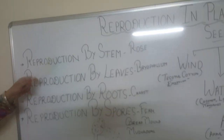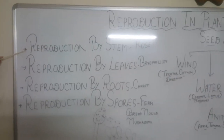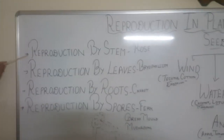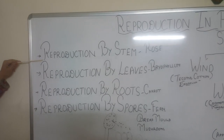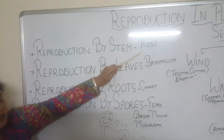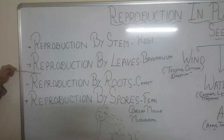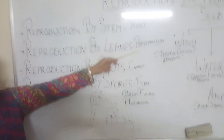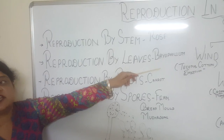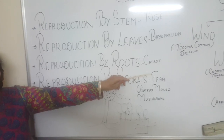Moving on to reproduction in plants: it's not necessary to buy a seed from the market. We can grow plants with the help of stem, leaf, and root. We talked about reproduction by stem — giving examples of rose, onion, and potato. Then reproduction by leaves — with the example of bryophyllum, from which we can grow 10 to 15 plants from one leaf. Next, reproduction by root — carrot and radish.